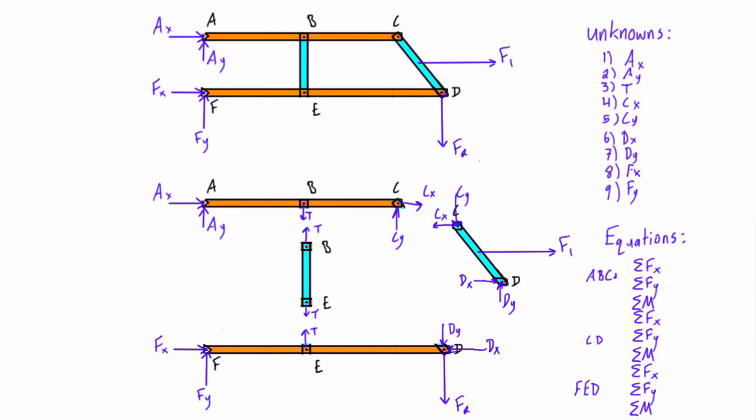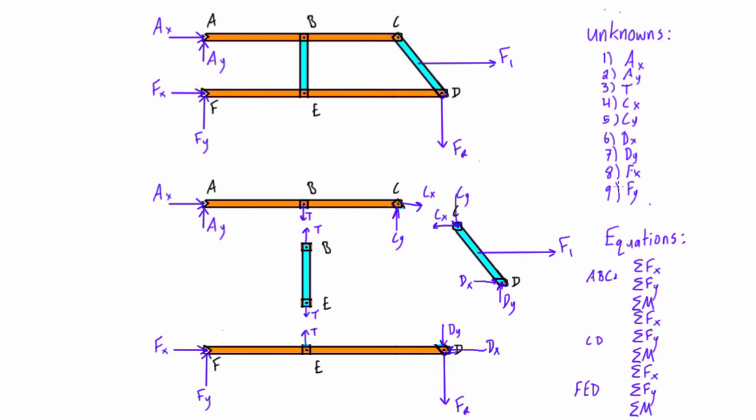So for member ABC, we'll have sum of force in X, sum of force in Y, and sum of moments about some point. For member CD we have the same thing, and for member FED we have the same thing. So basically we just have nine unknowns and nine equations, and we got these three equations from three independent sets.